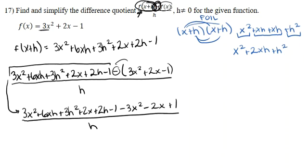Now we cancel like terms. Positive 3x squared and negative 3x squared cancel out. 6xh has no like term. 3h squared has no like term. Positive 2x and negative 2x cancel. 2h has no like term. Negative 1 and positive 1 cancel. We are left with 3h squared plus 6xh plus 2h in the numerator, divided by h.